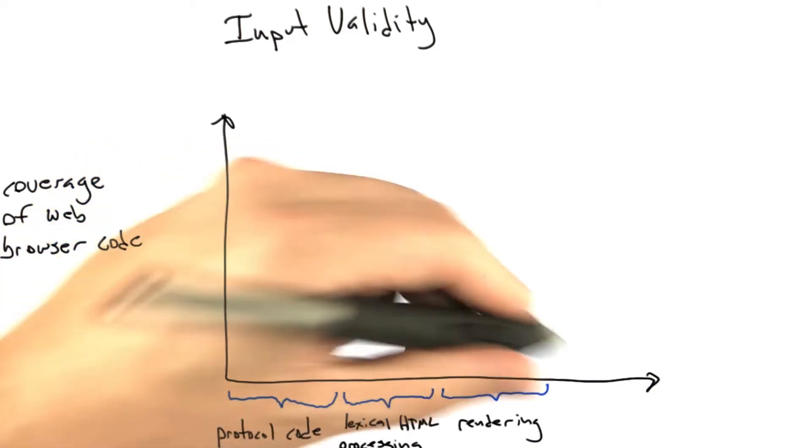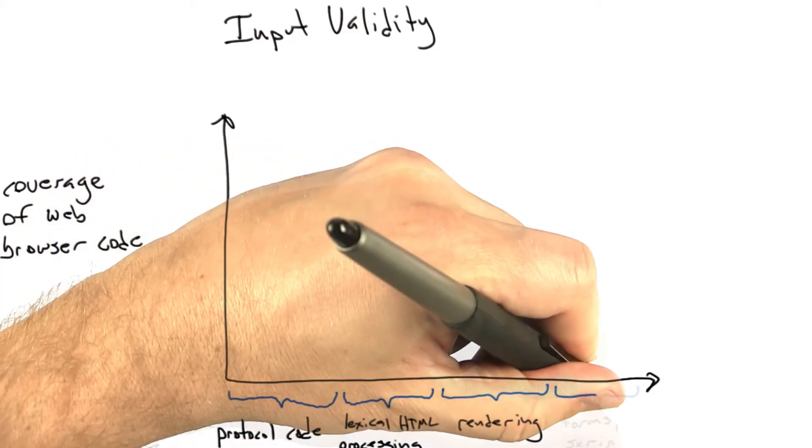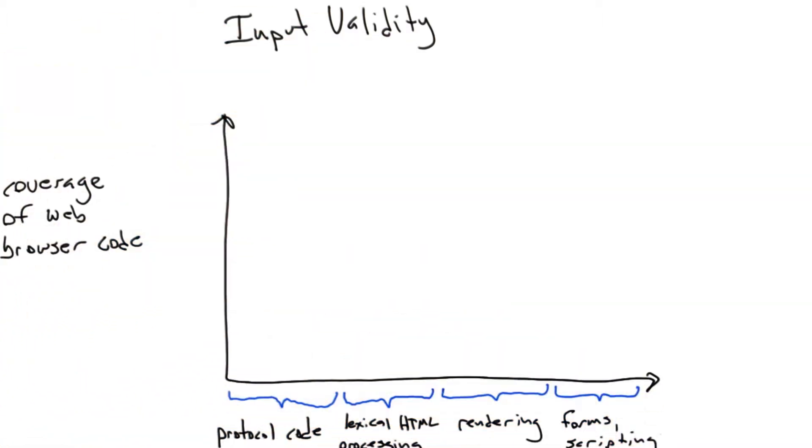it's going to go on to the rendering engine. Finally, we might have some more advanced processing that's dealing with things like forms, cookies, scripting, and such.